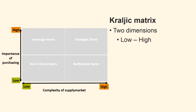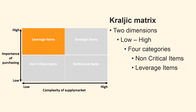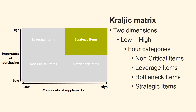Both dimensions go from low to high. This 2x2 matrix contains four categories: Non-critical items, Leverage items, Bottleneck items, and Strategic items. We shall now review each of the four categories.